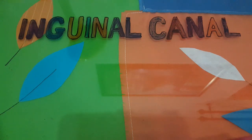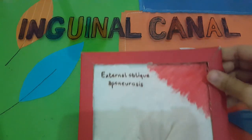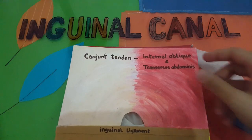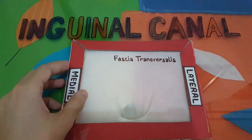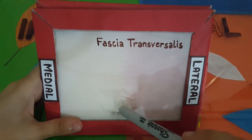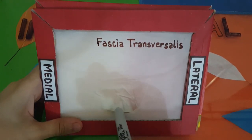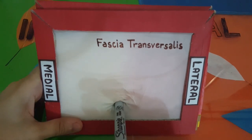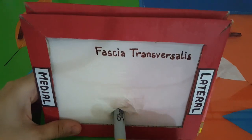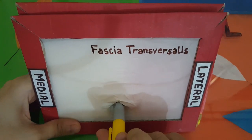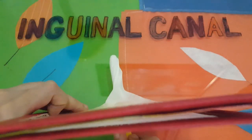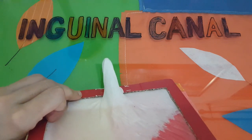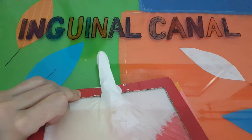Now let's arrange all three layers in the correct order: external oblique aponeurosis, then the muscular layer, then the fascia transversalis. The testes and spermatic cord pass straight out at the weakest point in the abdominal wall — where there is a gap in the middle muscular layer below the arching fibers of the internal oblique and transversus abdominis muscle. You can see that it has passed through the abdominal wall taking layers of the abdominal wall with it, which form the covering of the spermatic cord.